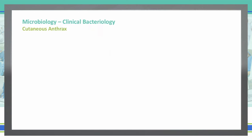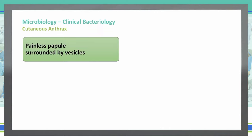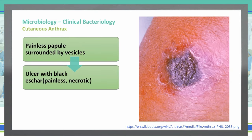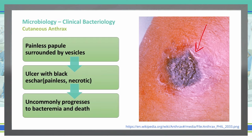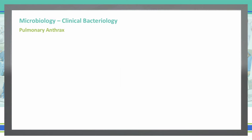Anthrax has been discussed quite a lot in the last 20 to 30 years regarding potential terroristic use. It causes painless papules surrounded by vesicles, which continue to grow and become ulcers that have a black eschar, as you can see in this picture. That black eschar is painless and necrotic — the tissue is dying in that area. It is uncommon, but it could progress to bacteremia and death.